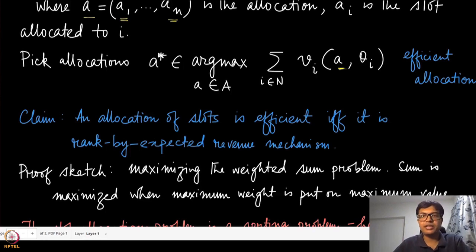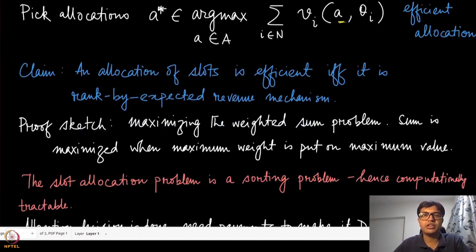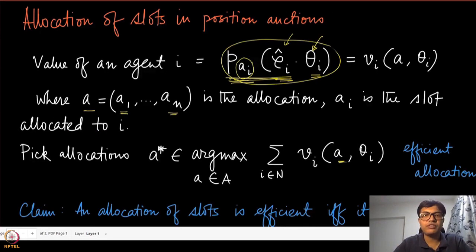The proof is fairly simple. I am not going to do it in the most rigorous manner, but the idea is that all that we need to do whenever the agents report their valuation is to multiply that with that reported theta. If you do the sorted allocation, so the first slot goes to the agent who has the highest ρᵢ hat times θᵢ value and give it the first slot, then overall, when you are taking the sum of all these things multiplied by the corresponding position effect, the position probability of that slot, that is definitely going to be the maximum.